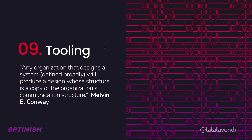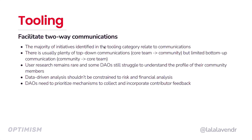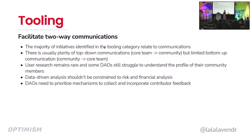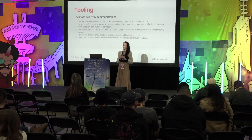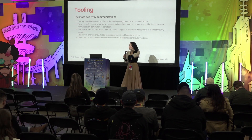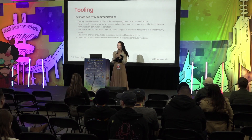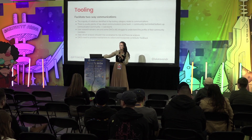What are the tools everybody's using? Organizations are communication structures, so it's not surprising that the majority of initiatives in the tooling category were focused on communication. DAOs are pretty good at top-down communication — from the core team to the community — but we're really lacking in bottoms-up communication from the community to the core team. User research remains rare; some DAOs admitted they didn't understand the profile of their own community members at all. Data-driven analysis exists but is mostly constrained to risk and financial analysis. We need to prioritize mechanisms to collect and incorporate contributor feedback and to use data to analyze DAO operations and decisions.